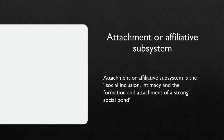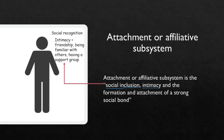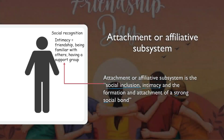The attachment or affiliative subsystem is about social inclusion, intimacy, and the formation of strong social bonds. Man is a behavioral system and this subsystem is based on social inclusion — being recognized by others — and intimacy, which means friendship, being familiar with others, and having a support group. According to Dorothy, this is the most important subsystem, needed for social organization.